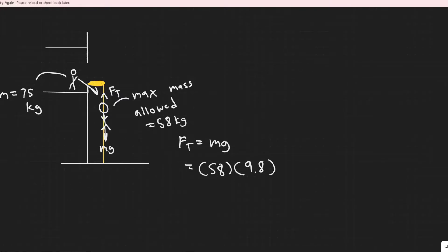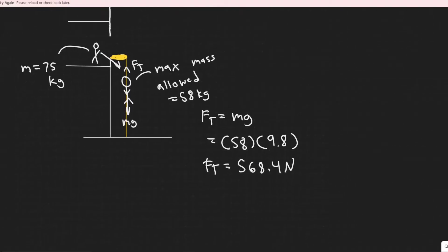But notice that we know the only or the maximum mass it allow is 58. Therefore, if we do 58 times G, which is 9.8, you would get the maximum tension that this cable would allow. So if you do this, you would get 568.4 newtons. Therefore, we know that this cable is only going to allow 568.4 newtons.